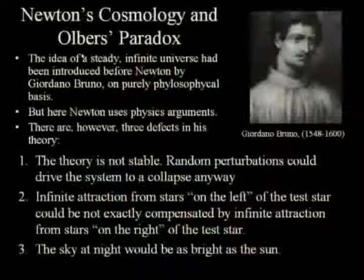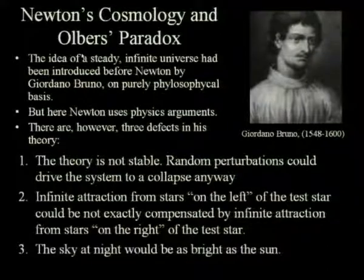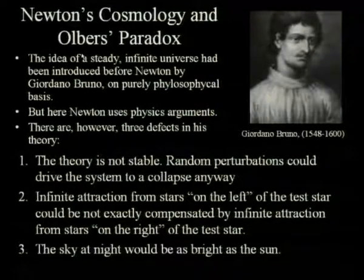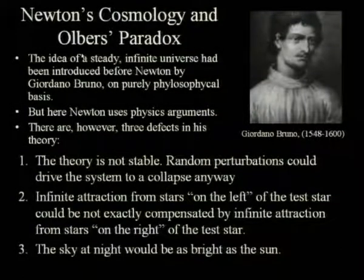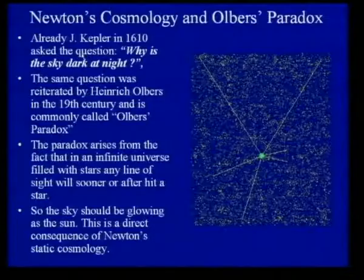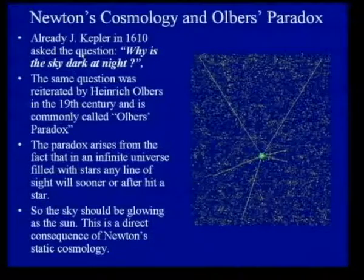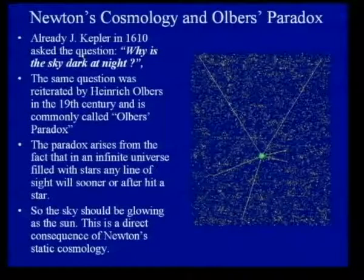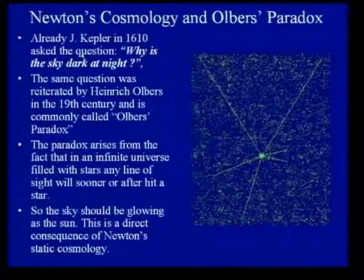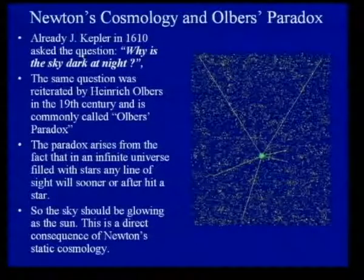Third, the night sky would be as bright as the sun. This was the first issue raised against the idea of an infinite universe filled with stars. This problem was already introduced by Johannes Kepler in 1610. He already asked: why is the sky dark at night? This question was then reiterated by Eric Olbers in the 19th century, and is now known as the Olbers paradox.